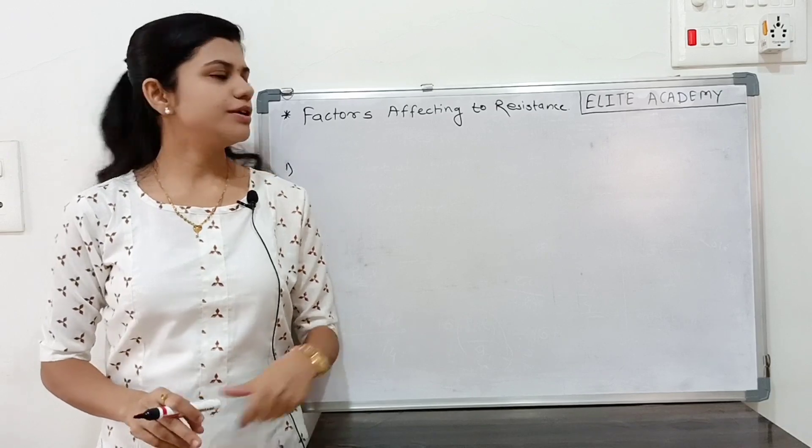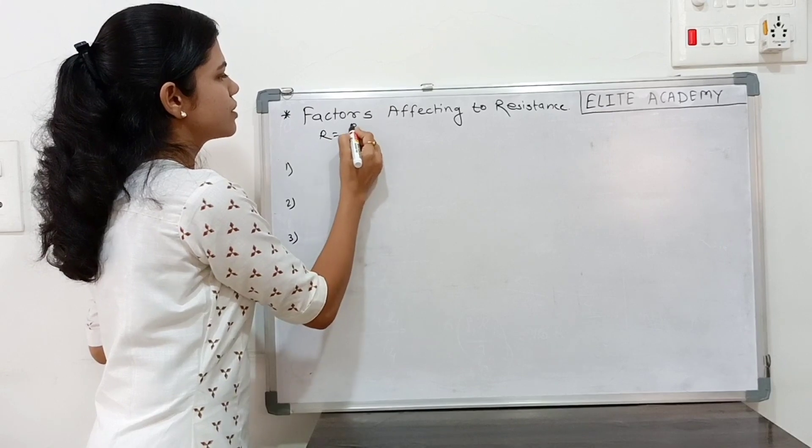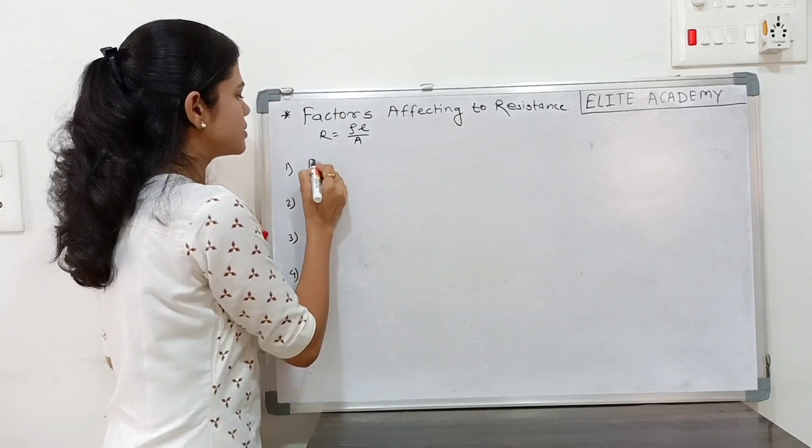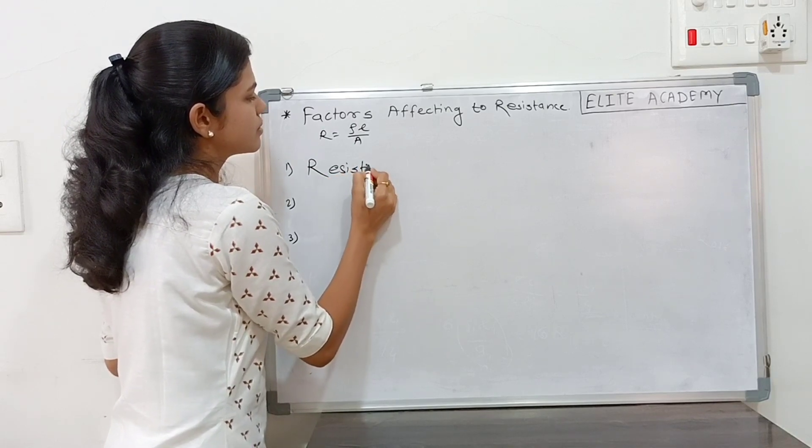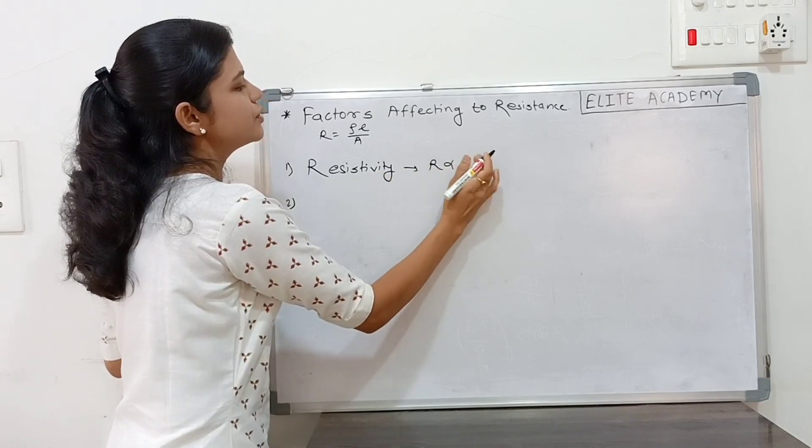This N is nothing but the how many times this gets stretched. Next point. Factors affecting to resistance. Now what is formula for resistance? Rho L upon A. Therefore, resistance is dependent upon the resistivity and it is directly proportional to rho.